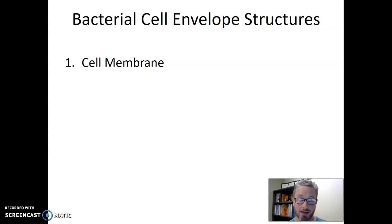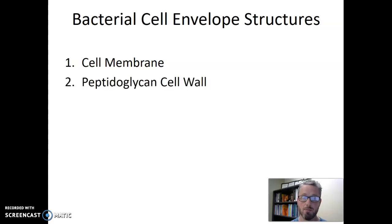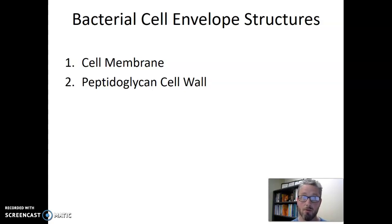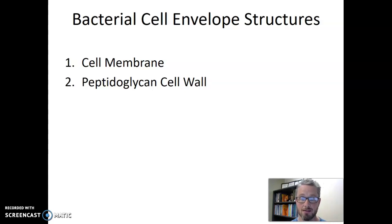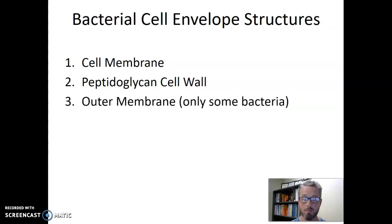The next structure that is part of the bacterial cell envelope is the peptidoglycan cell wall. Peptidoglycan is a chemical that bacteria tend to make their cell walls out of — we'll learn a lot more about it in another video. So all bacterial cell envelopes have the cell membrane and then the peptidoglycan cell wall. The last structure that can exist in some bacterial cell envelopes is the outer membrane, which is only present in some bacteria.